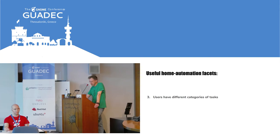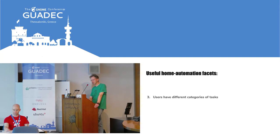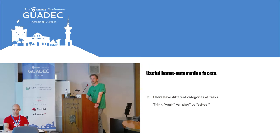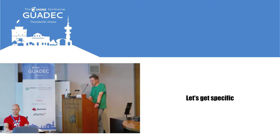The third facet is that users have different categories of tasks they might be doing at their desktop system, and which sort of tasks they're working on can be important for how the house responds. Just think of whether you're working or playing — you might expect other things to happen around the house depending on that. It's not necessarily easy to define those.